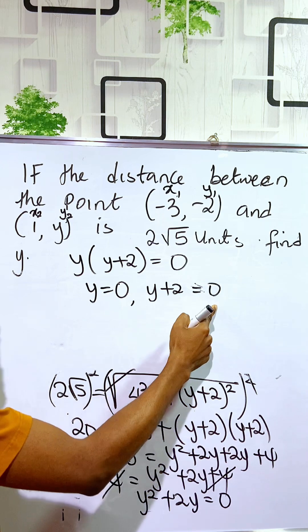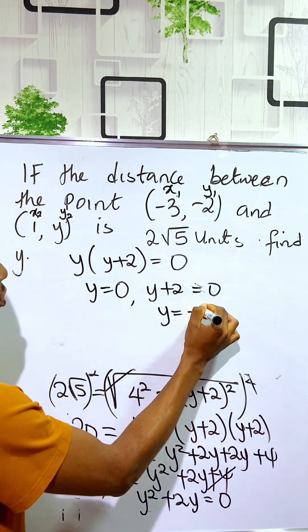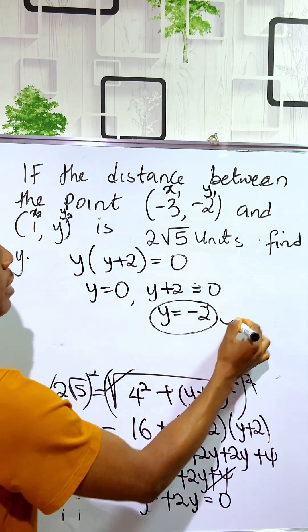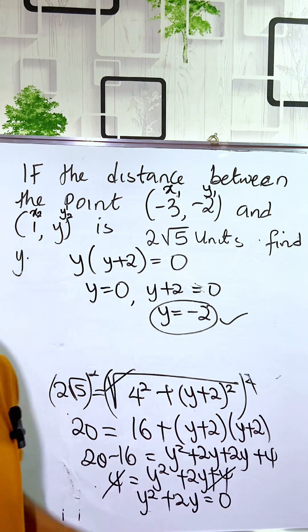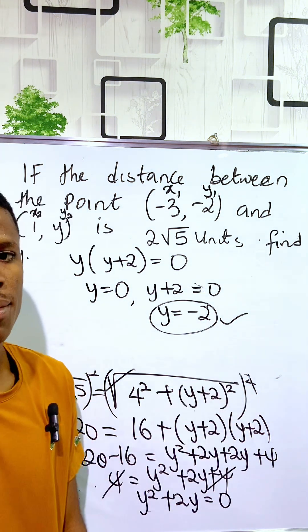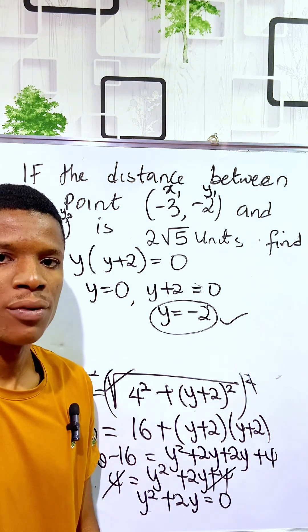Then if y plus 2 is 0, that means y is equal to -2. But we only pick this value, -2, as the point in the system. Like, comment, and share for more. Bye.